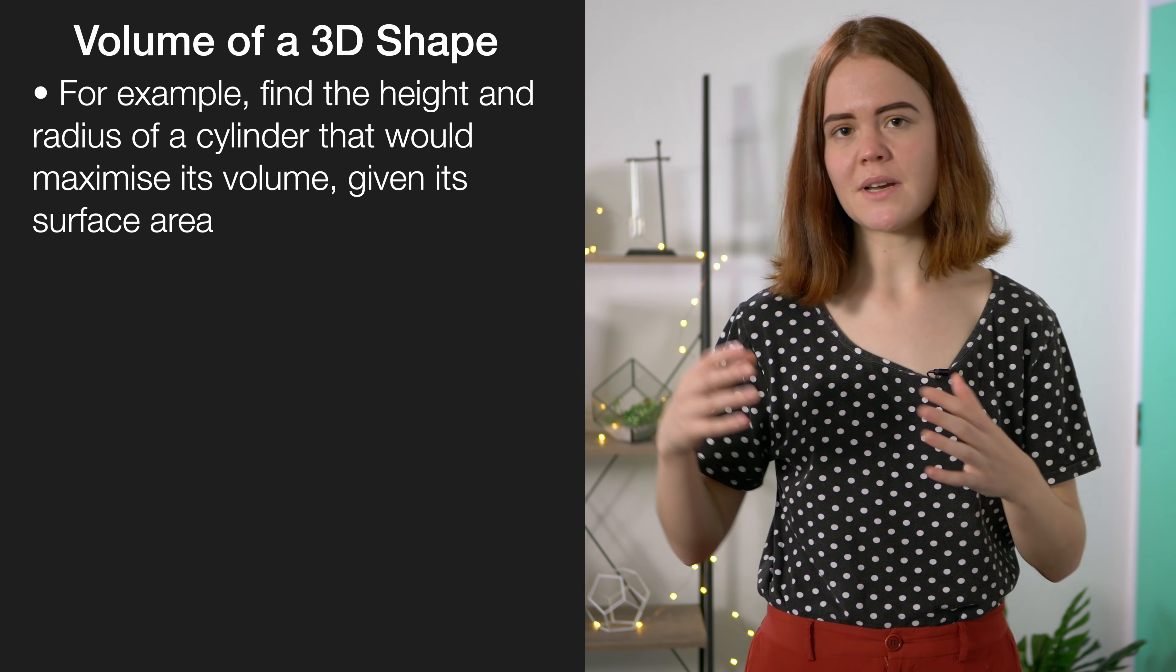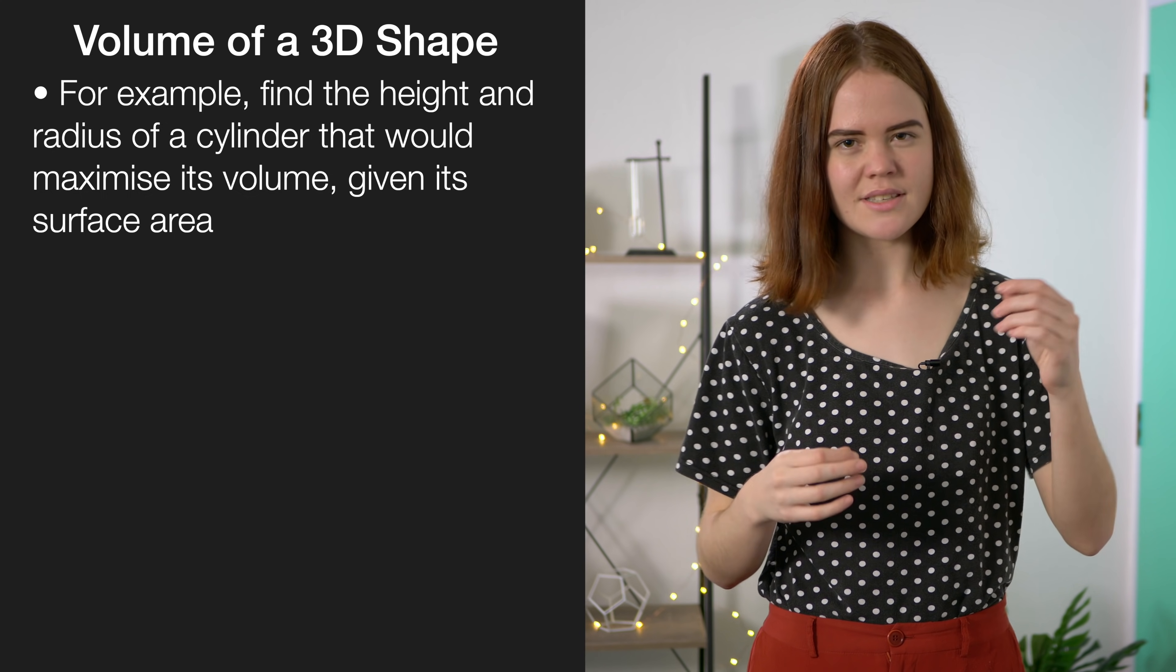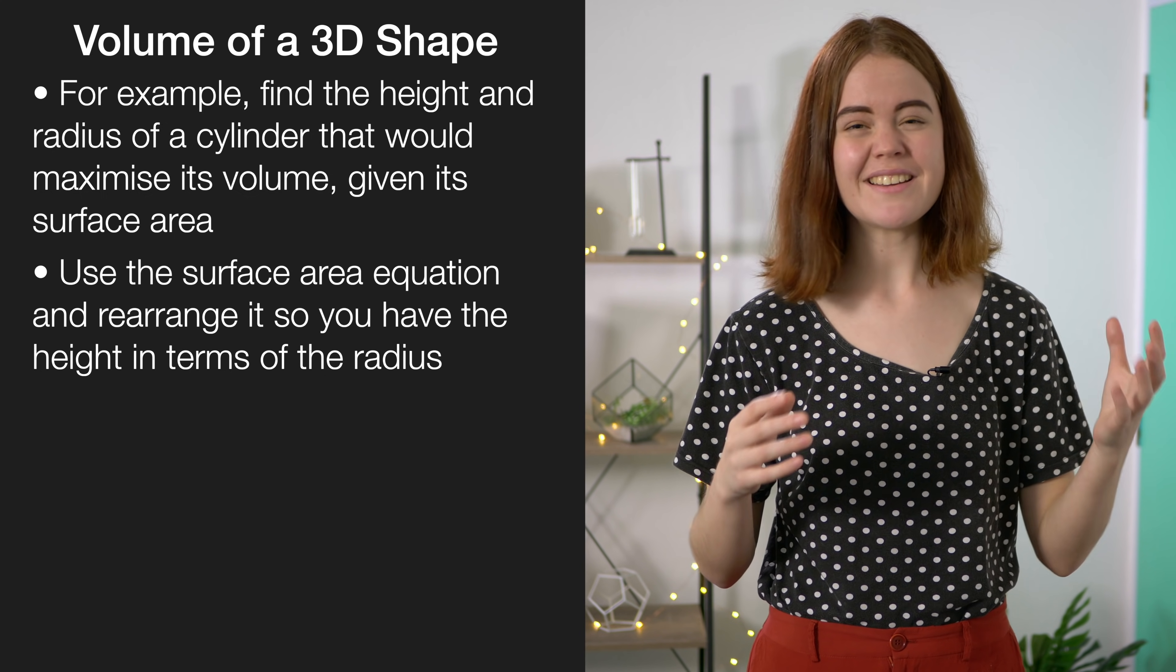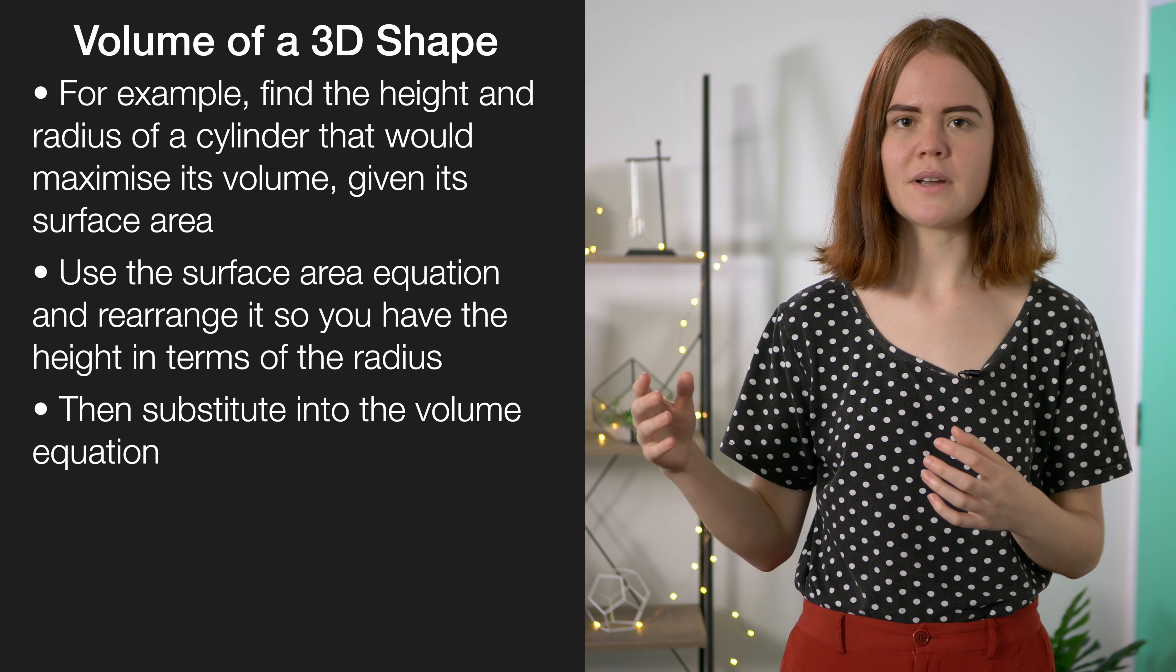A lot of the trickier excellence questions focus around finding the volume of a three-dimensional shape. For example, a question might ask you to find the height and radius of a cylinder that would maximize its volume given that it had a particular surface area. The whole trick here is to use that surface area equation and rearrange it so that you have the height in terms of the radius, then substitute this back into the volume equation.